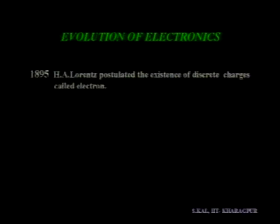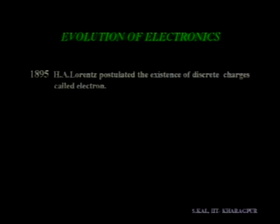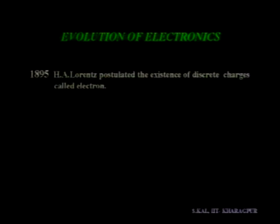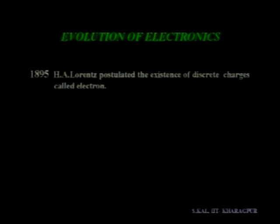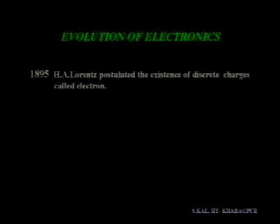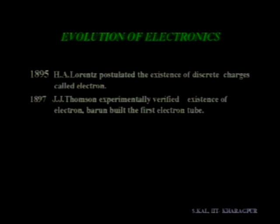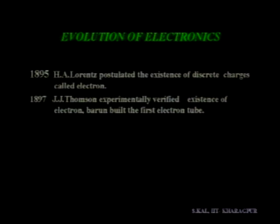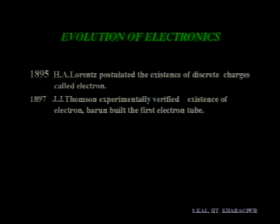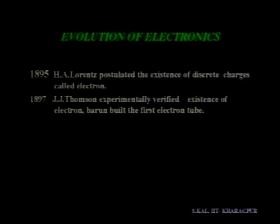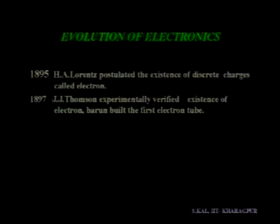We can start from the discovery of the electron. In 1895, H.A. Lorentz postulated the existence of discrete charge, called electrons. Just after 2 years, J.J. Thomson experimentally verified the existence of the electron. And based on this discovery, Brown built the first electron tube.